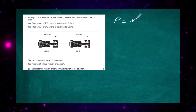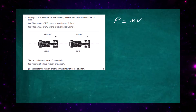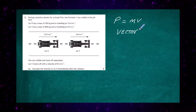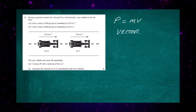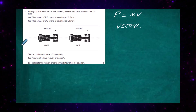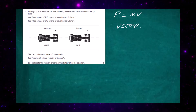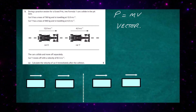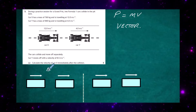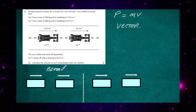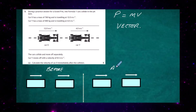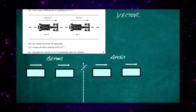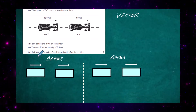Momentum is calculated by the mass of the object times its velocity. Remember that momentum is a vector quantity, so we have to take into consideration the direction of what is happening. In this type of problem, you simply draw a diagram of before and after. There's a diagram here — this part is the 'before' section, and after the dotted line is the 'after' section showing what happens post-collision.